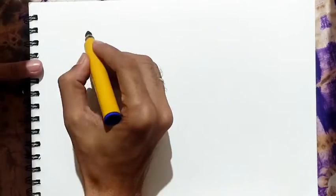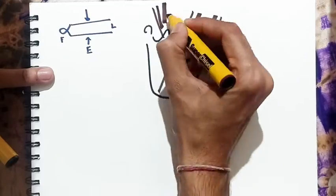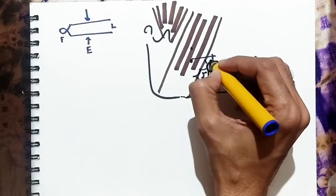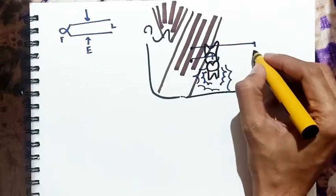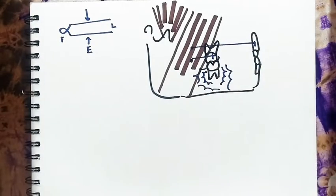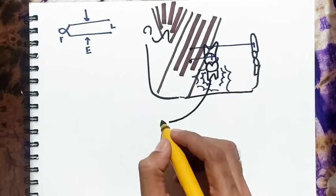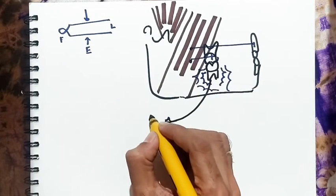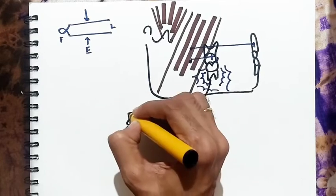Now let's understand another occlusal scheme, that is mutually protected occlusion. Our mandible is class 3 lever, that means force nearer to the muscle will be more. So posterior teeth will bear more force than anterior during biting. That's why they can be used to crush hard food. Plus studies have shown that contact in posteriors will increase masseter and temporalis activities.